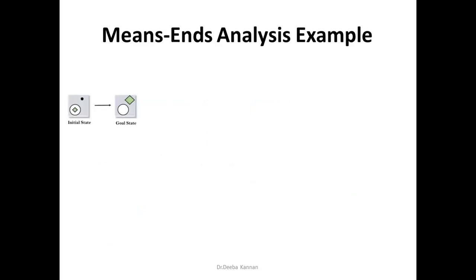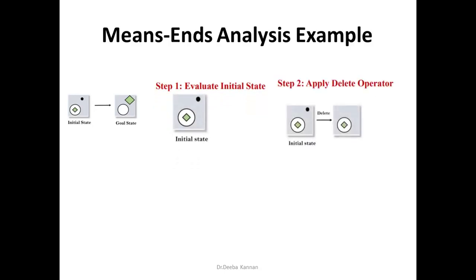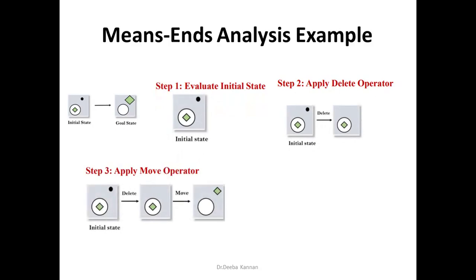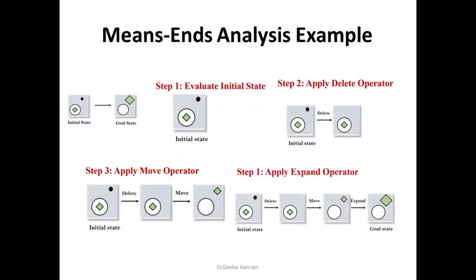In the initial state we have a circle, diamond, and a dot. The dot is not in the goal state, so the first step is to apply a delete operator to delete the dot. After deleting the dot, compare to the goal state. In the goal state the circle and diamond are separate, but here we have the diamond placed inside the circle. So the next step is to apply the move operator to move the diamond out of the circle.